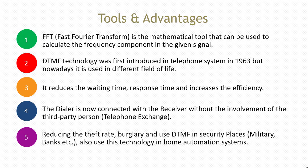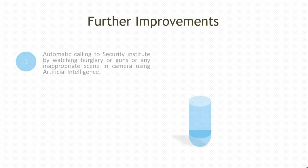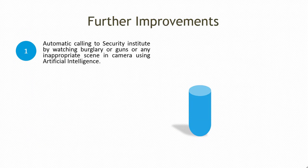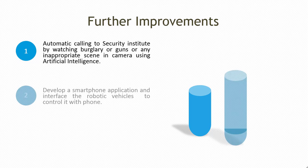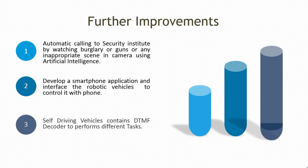Reducing the theft rate, burglary, and use DTMF in security places, military, banks, etc. also use this technology in home automation systems. Further improvement is obviously required: automatic calling to security institutes by watching burglary or guns or any inappropriate scene in camera using artificial intelligence, develop a smartphone application and interface the robotic vehicles to control it with the phone. Self-driving vehicles contain DTMF decoders to perform different tasks.